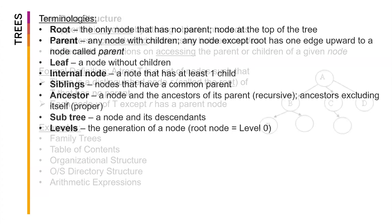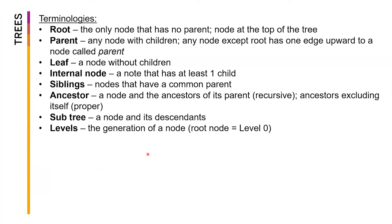Let's cover more terminologies. We've encountered the root, which is the only node that has no parent, or the node at the top of the tree. By practice, the orientation of trees usually goes downward. Technically, you can do it in any direction as long as one node spans other nodes in one direction, but in practice the root is at the top.